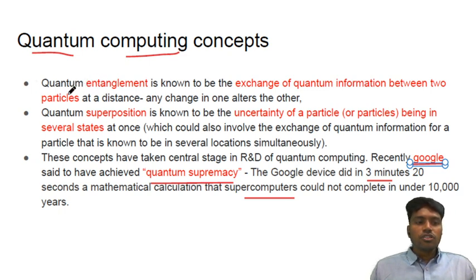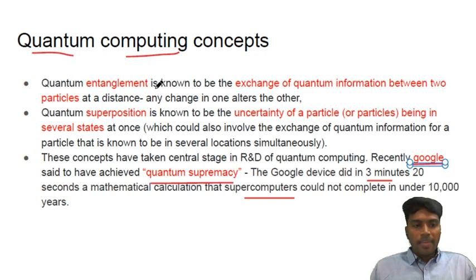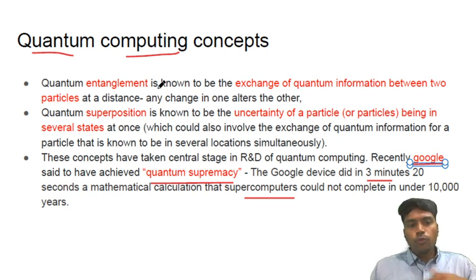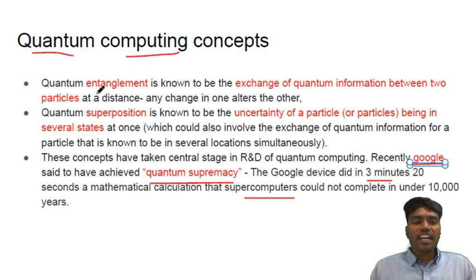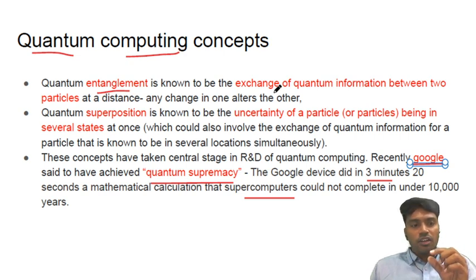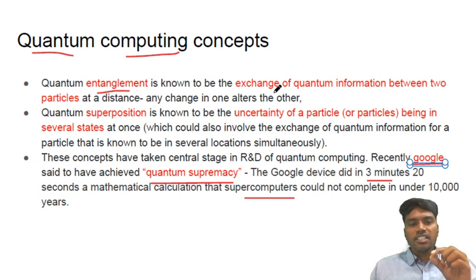There are two important concepts of quantum physics: quantum entanglement and quantum superposition. Quantum entanglement is nothing but the exchange of quantum information between two particles — at the quantum level, going deeper than electrons and protons. The significance of entanglement is that any change in one particle gives a significant change in the other particle. This sensitivity of change in one particle affecting the other is being harnessed in quantum computing.